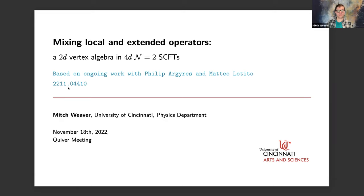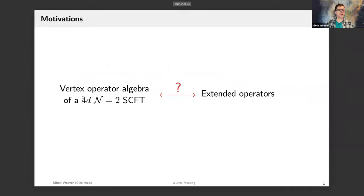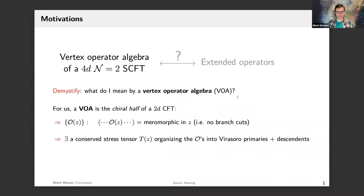My talk will coincide with about half of the results we lay out in this paper, but I hope to make up for what I don't cover by going over some foundational aspects of this story that should serve as a good primer. Our central motivations revolve around better understanding the relationship between two quantities: the associated vertex operator algebra of a 4d N=2 SCFT, and the set of extended operators which can appear in these theories.